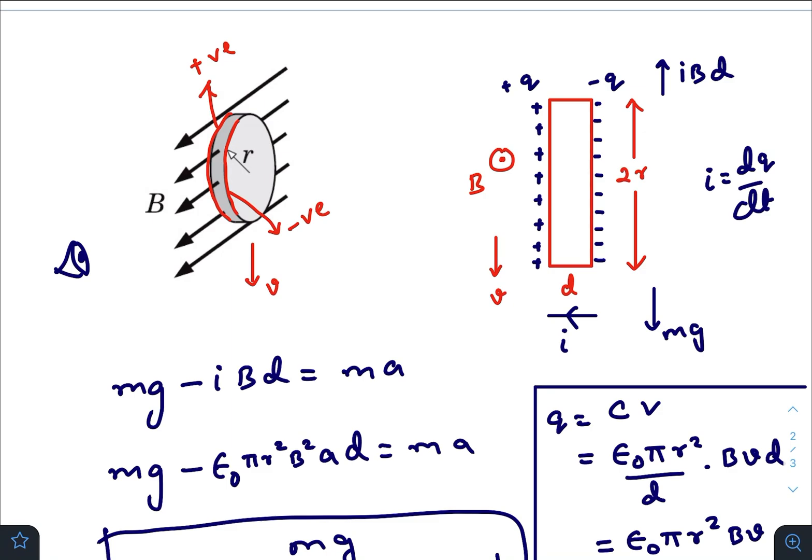Now, as the conductor moves further downwards, velocity increases, more and more charges start to accumulate here. Due to that movement of charge, there will be an effective current. And that current will be the rate of increase of charge on this surface.